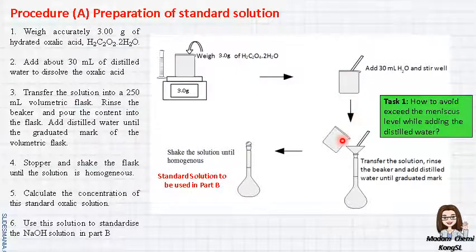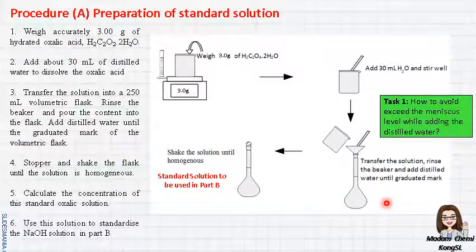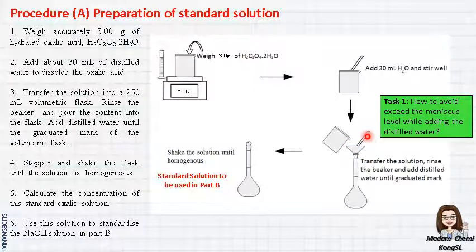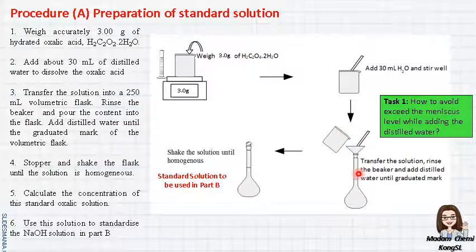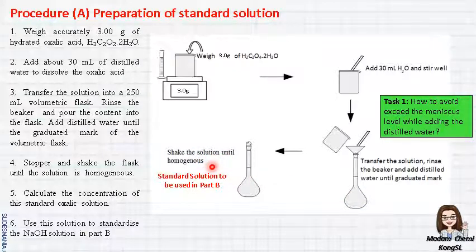Then you transfer the oxalic acid solution into the volumetric flask. Before you transfer, make sure all the apparatus is already rinsed with tap water and then with distilled water. Then you transfer, and remember you must also rinse the beaker, the funnel, and the glass rod as well. All the rinsing water must be poured inside the volumetric flask, because we have to make sure all the oxalic acid is totally transferred into the volumetric flask. This is the way to prepare the standard solution. Then you have to shake the solution until homogeneous. This standard solution you are going to use in part B.